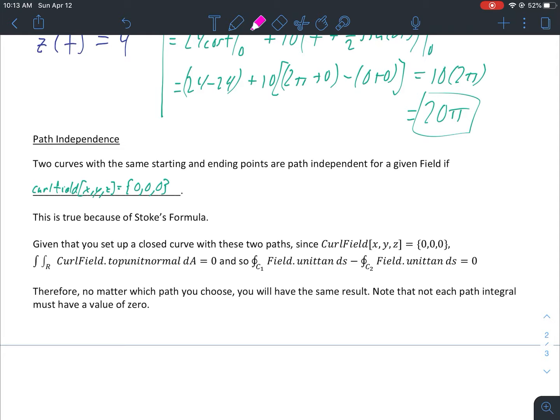Here we are given that you set up a closed curve with these two paths. If curl field is {0,0,0}, obviously the integral would be 0, which means if we were doing field dot unit tan of c1 and field dot unit tan of c2, they have to be equivalent, which would also if you subtract them would give you 0. Therefore, no matter what path you choose, you'll have the same result. Note that not each path integral must have a value of 0 - they could be anything, they'd be equivalent, so like 7 minus 7 or 12 minus 12 or whatever it would be.